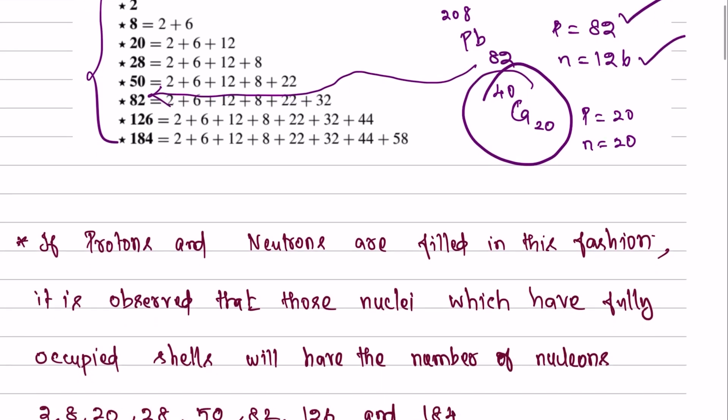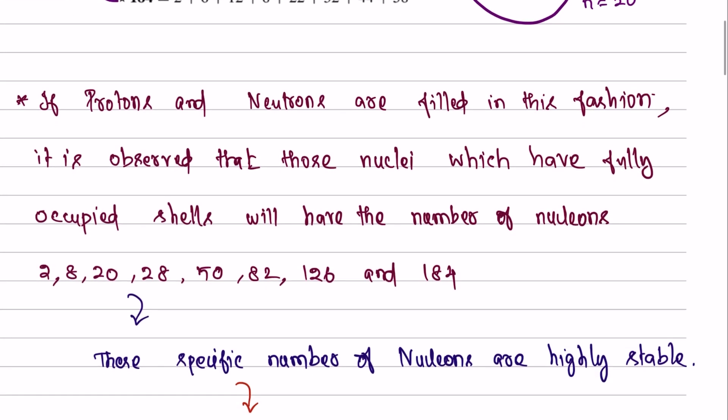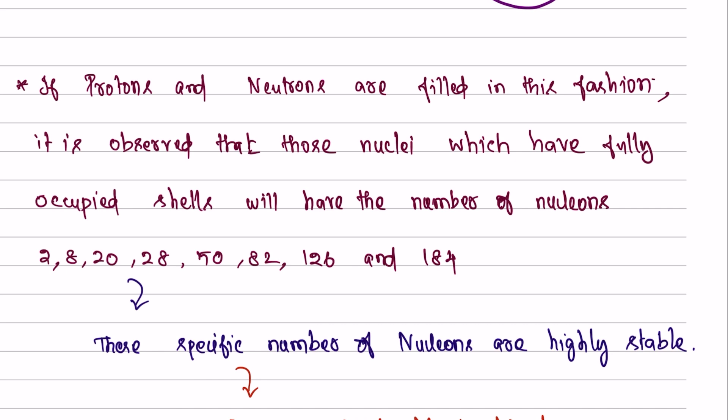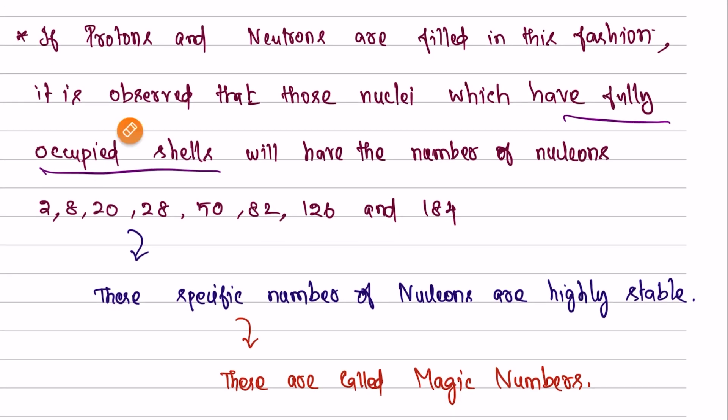If protons and neutrons are filled in this fashion, it is observed that those nuclei which have fully occupied shells will have a specific number of nucleons. There are number of nucleons: 2, 8, 20, 28, 50, 82, 126, 184. We are talking about magic numbers. These specific numbers of nucleons are highly stable and are called magic numbers. If the neutrons or protons have magic numbers, the nucleus is more stable.